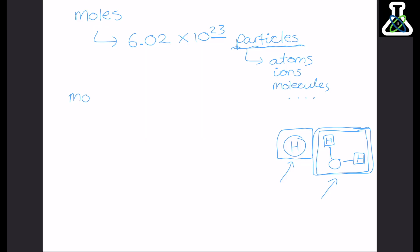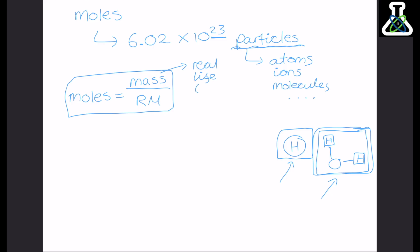To calculate moles, you need to divide the mass by the relative mass. The mass on the top is the real-life mass, so this is going to be in grams. The relative mass is the number on the periodic table that tells you how heavy the atom is in relation to other atoms. So if we had 12 grams of carbon, and carbon's relative atomic mass is 12, we do 12 divided by 12, which gets us 1 mole. So in 12 grams of carbon we have 6.02 times 10 to the 23 carbon atoms.